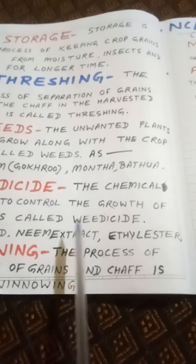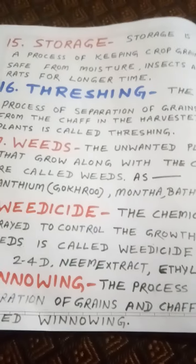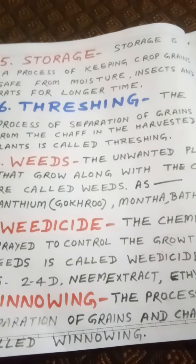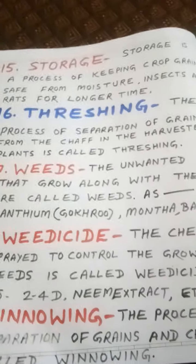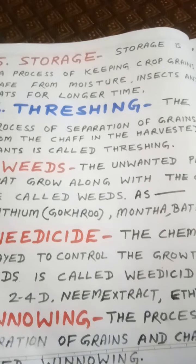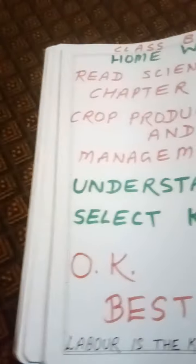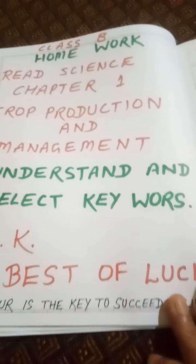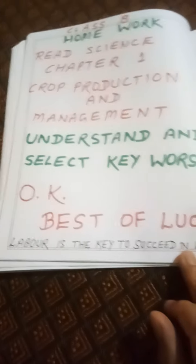So these are the keywords of this chapter on Crop Production and Management. Try to write and learn them. We will be able to write and revise them all through this week. Understand and select the keywords. Best of luck.